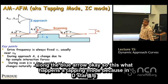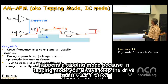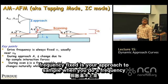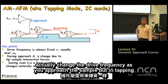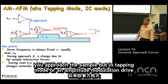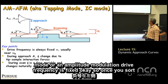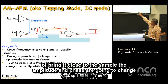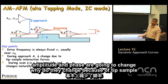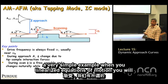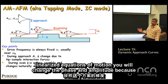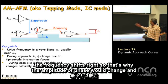In tapping mode, the drive frequency is kept fixed as you approach the sample — this is amplitude modulation. In frequency modulation you actually change the drive frequency during approach. In tapping mode, as you bring the cantilever close, the amplitude and phase change due to tip-sample interaction forces. From the linearized analysis, the frequency shifts, which is why amplitude and phase change.